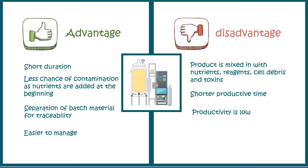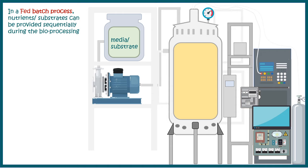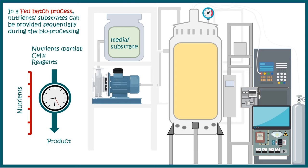A modification of the batch process is known as the fed batch process, where nutrients or substrates can be injected sequentially. You begin with a partial concentration of nutrient or media and eventually inject additional nutrients or media throughout the process. This allows you to avoid the harmful effects of high initial media concentration, which might otherwise inhibit the growth kinetics of the cells.